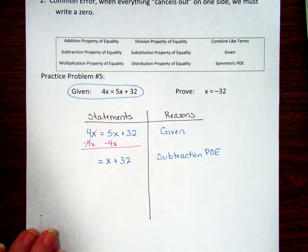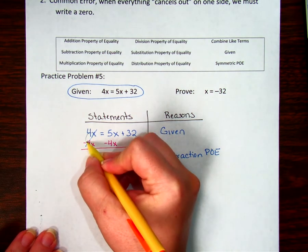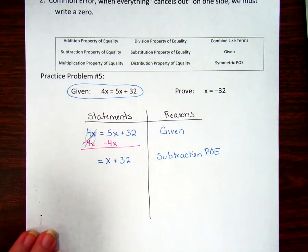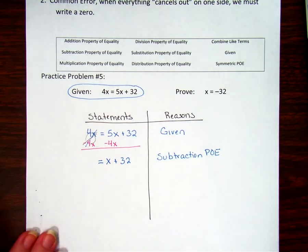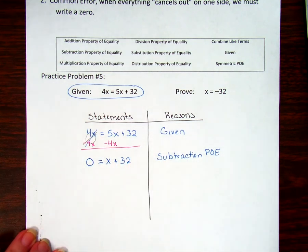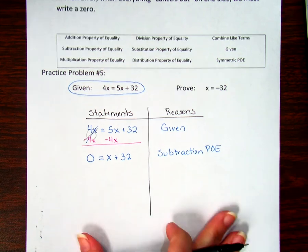Remember 4X minus 4X, if you have 4 apples and you take away 4 apples, you're left with 0. So it doesn't really cancel out and disappear and go away. It turns into a 0. That's a real common mistake that we make is sometimes we forget that it really does become a number. It becomes the number 0.